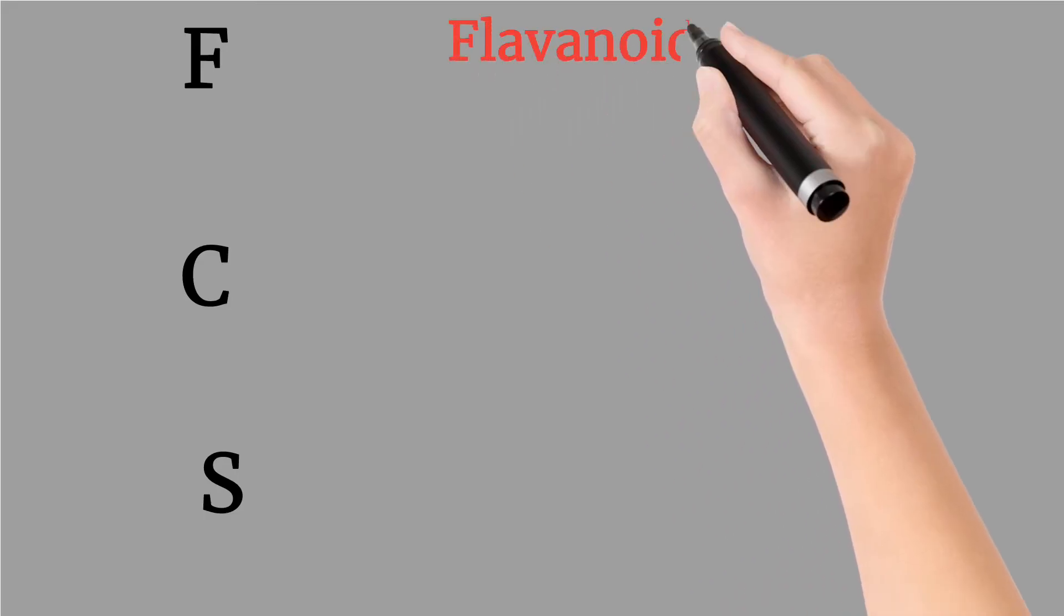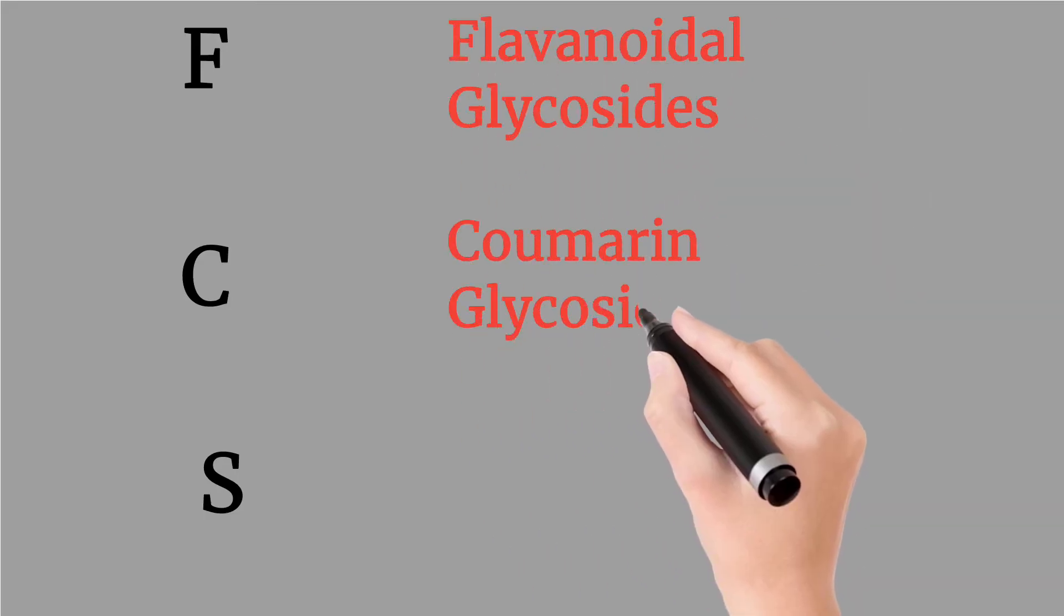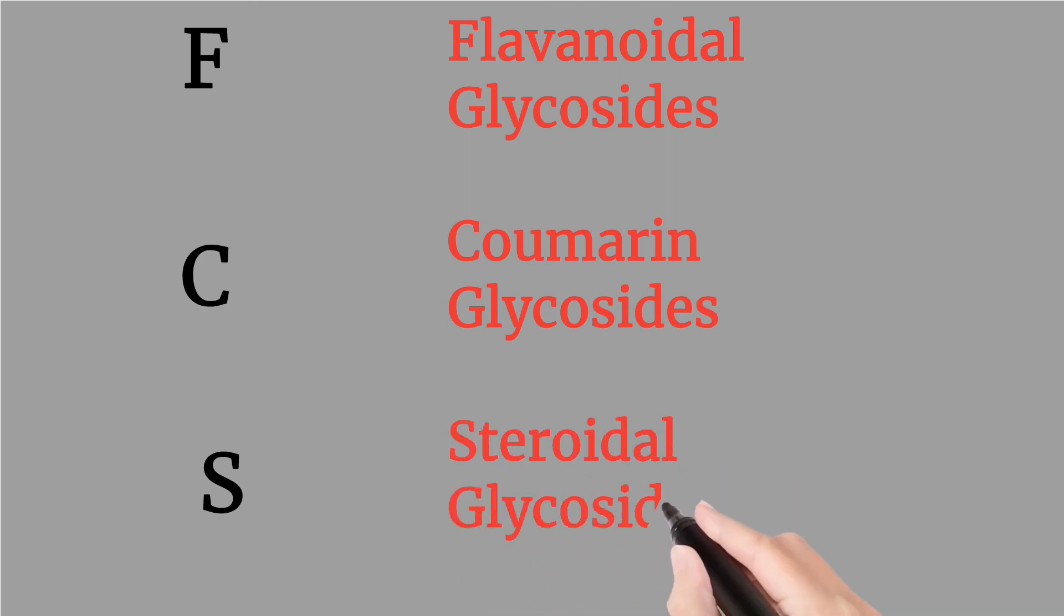F means flavonoidal glycosides, C means coumarin glycosides, and S means steroidal glycosides.